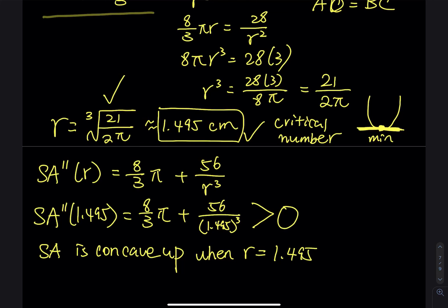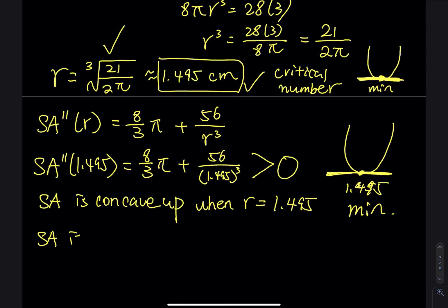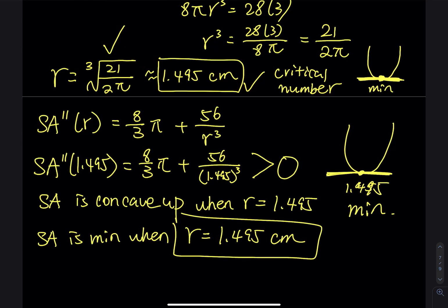The function is concave up and has a horizontal tangent at r ≈ 1.495, which proves that point is a local minimum. In conclusion, the surface area is minimized when r = ∛(21/(2π)) ≈ 1.495 centimeters. That is the answer — as long as the radius equals this number, the surface area of the object is minimized.